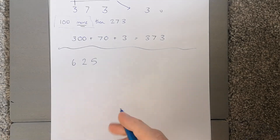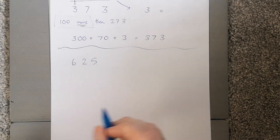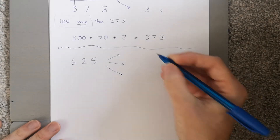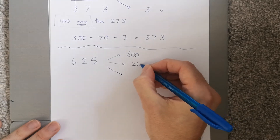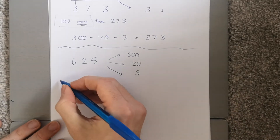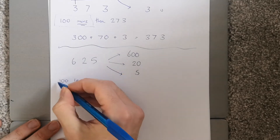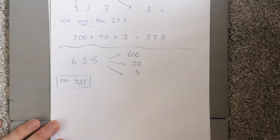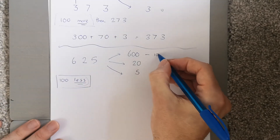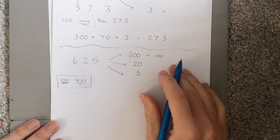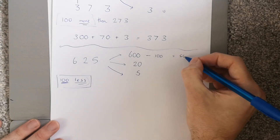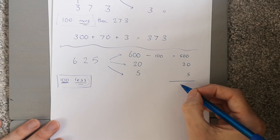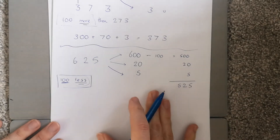Let's try 100 less. Take the number 625. You can do it the same way — split it up: 600, 20, and 5. Now if I'm looking at 100 less, I'm subtracting, going down because it's less. That means I'm taking away 100 from 600, giving me 500. Put it all together: 500, 20, and 5 — that makes 525.